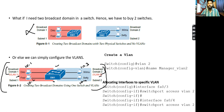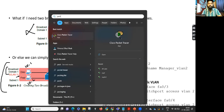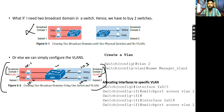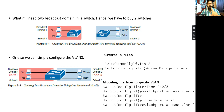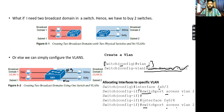VLAN lab - when we use one switch, PCs get IPs like 10.0.0.1, 10.0.0.2, 10.0.0.3, 10.0.0.4. We confirm with ping. Let's open Packet Tracer and write the configuration. Create VLAN 2, then go to interface fa0/3 and fa0/4, use the command 'switchport access VLAN 2'.